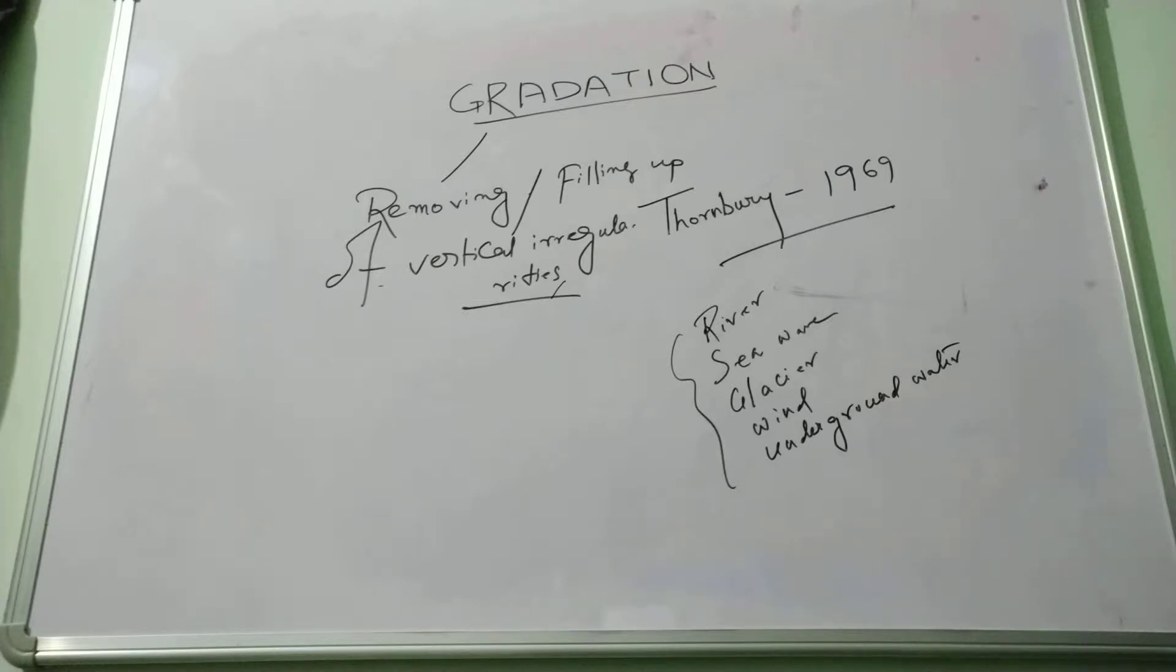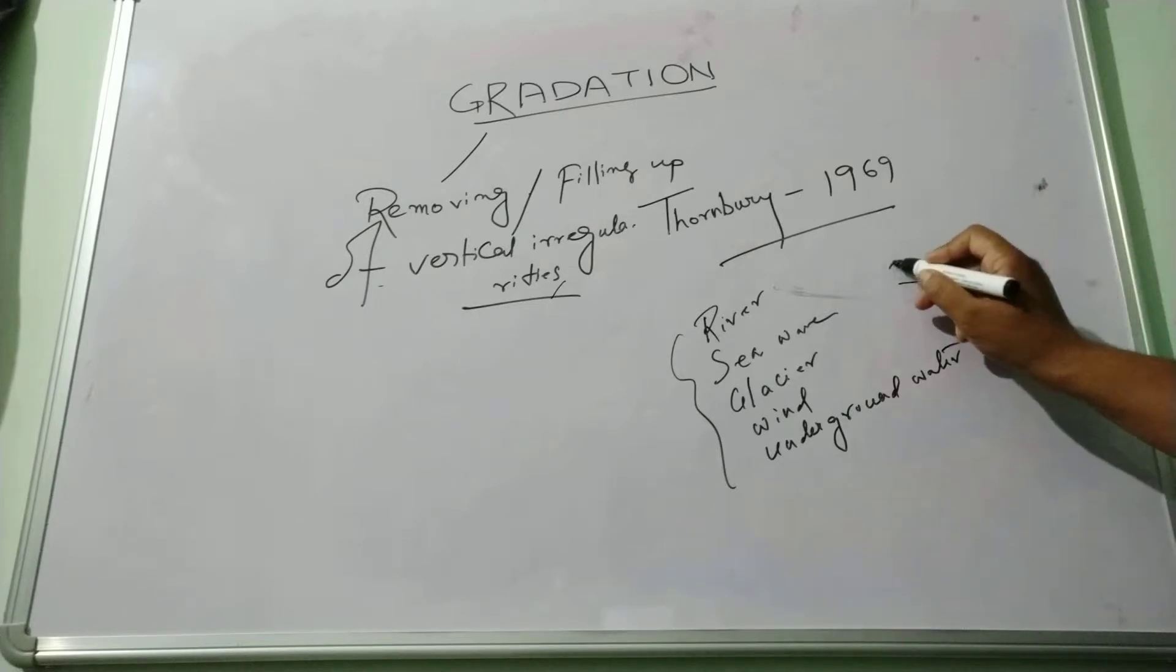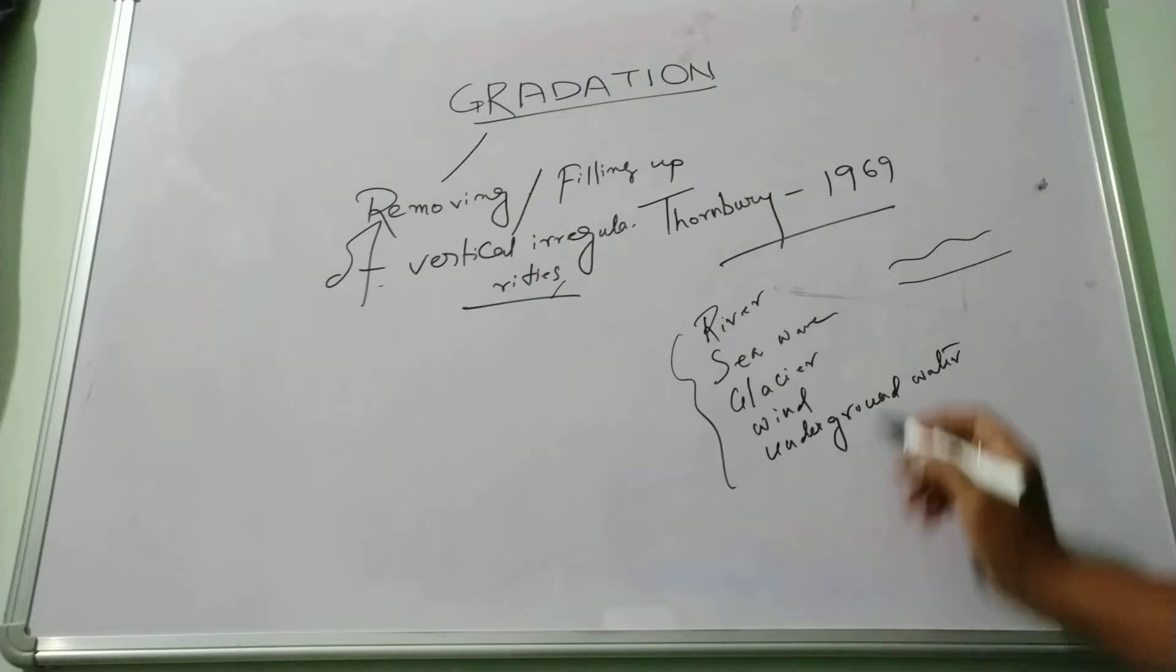When the surface is generally called a graded surface, where erosion and deposition are both equal by these geomorphic agents, then it is known as a graded surface.